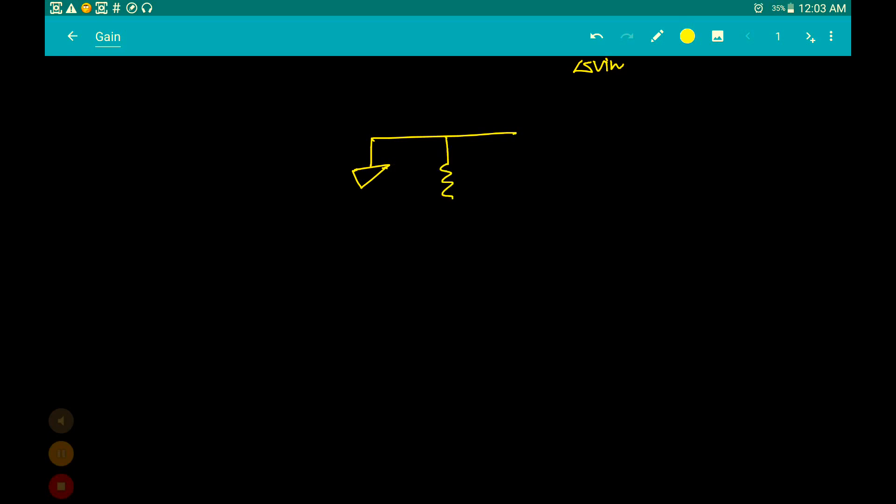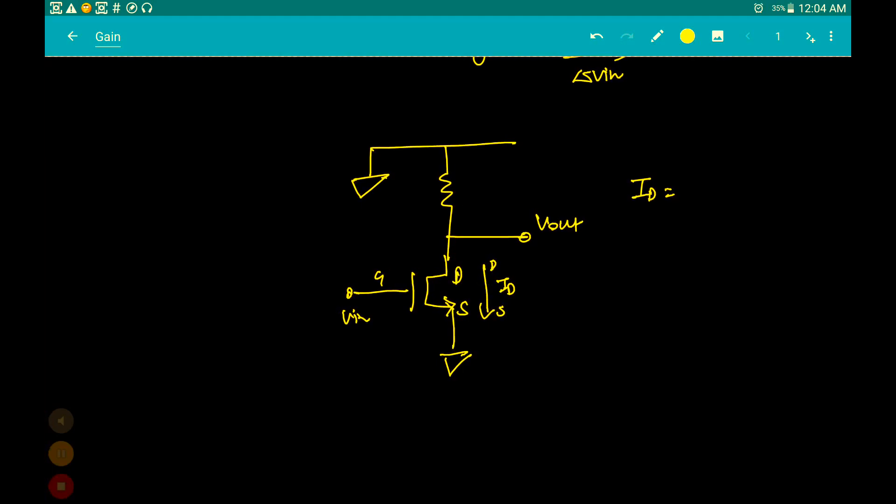We know that a voltage of 0 is being applied over here. This is RD, this is Vout. This is your ground, source, drain, gate, input. You know that ID is equal to... ID is the current flowing from drain to source through the transistor. ID is equal to VGS into gm, where gm is the transconductance.